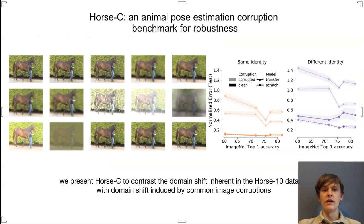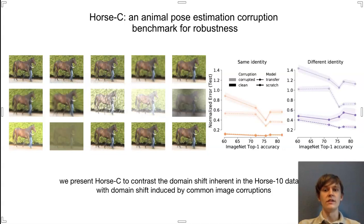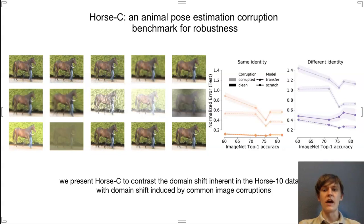For comparison to Horse 10, we also put forth Horse C. In Horse C, we augment our horse data by applying 15 common image corruptions. Not only could we evaluate performance across different individuals, but we could also evaluate robustness across common image corruptions. Our results on Horse C directly reflect our results on Horse 10: pre-training is crucial for out-of-domain robustness, and if your model is pre-trained, you will perform better if you use better model backbones.